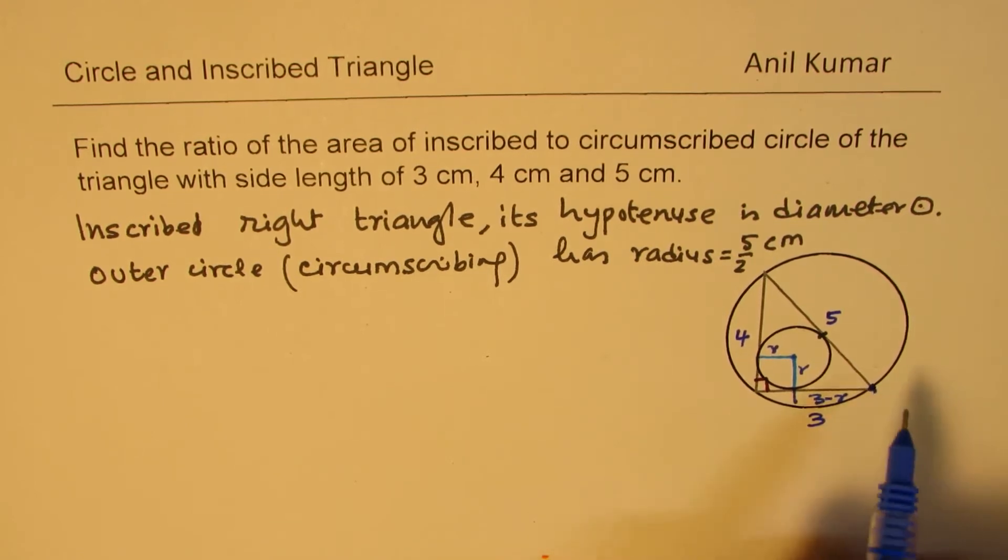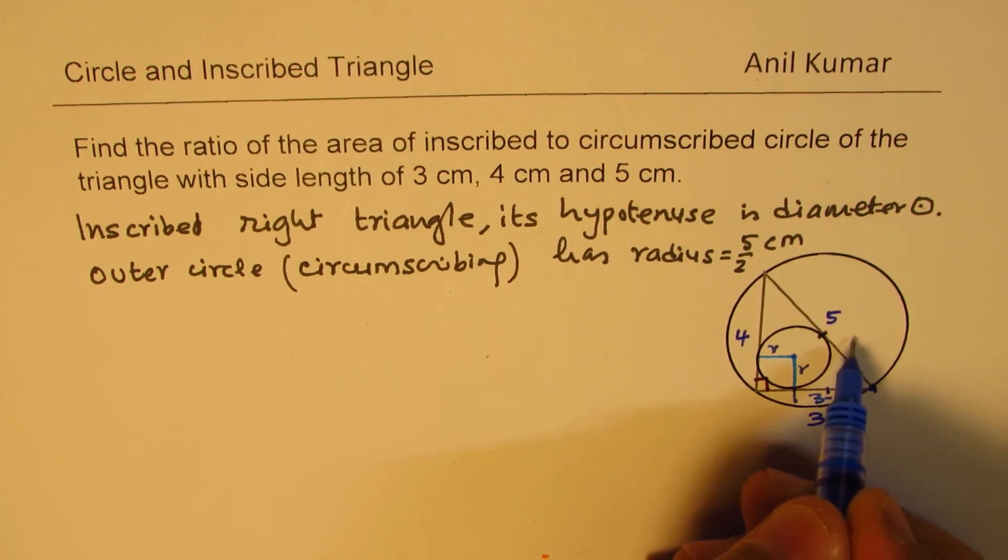So if you look from this vertex, we have a tangent and another tangent, so two tangents. So that means that the tangents should be equal. So this side is also 3 minus r.